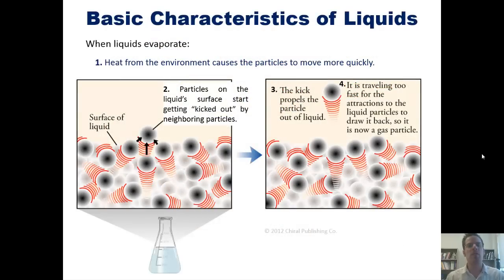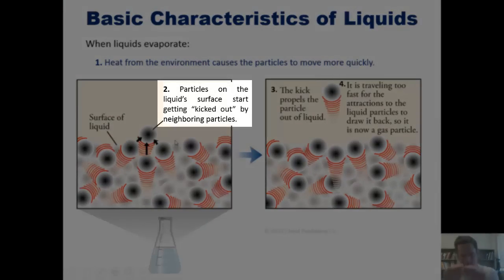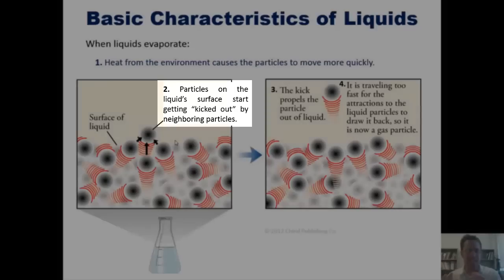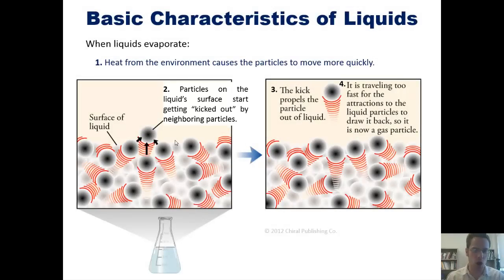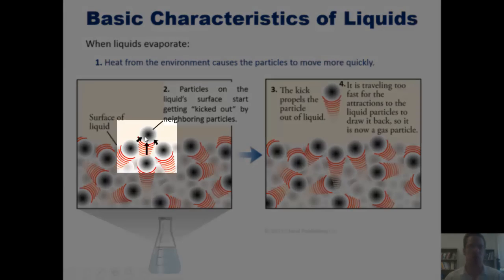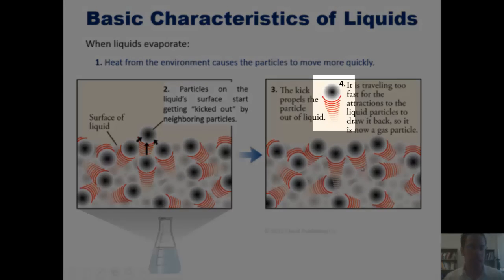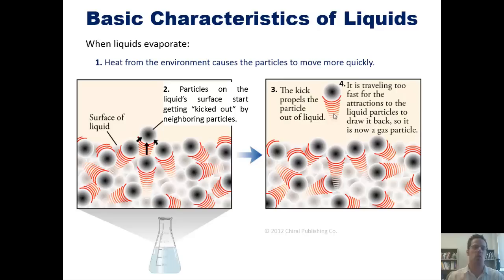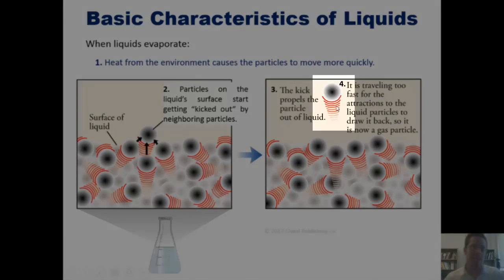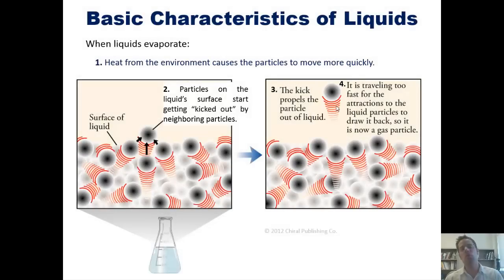When liquids evaporate, heat from the environment causes the individual particles in them to move more quickly. If we were able to look in very closely at the surface of a container of liquid, we would see that individual particles on the top of that surface are being kicked or propelled or impacted by the particles beneath them. When that propulsion is sufficiently strong, it can actually eject a surface molecule out, propelling it away from the particles beneath it. Once that particle is ejected with sufficient distance that it no longer feels attraction to the particles that it just left, this particle now becomes a gas particle. That is what happens on a molecular level when liquids evaporate or boil.